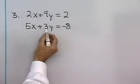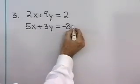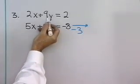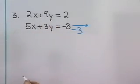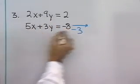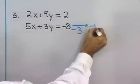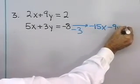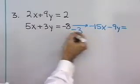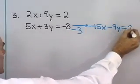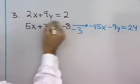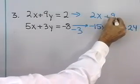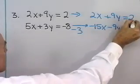If I multiply the second equation by negative 3, I'll have negative 9y there. I can add that to the 9y in the first equation and get 0. Negative 3 times 5 is negative 15x, minus 9y, equal to negative 3 times negative 8, which is positive 24. The first equation stays the same: 2x plus 9y is equal to 2.